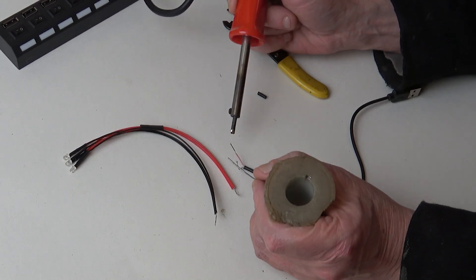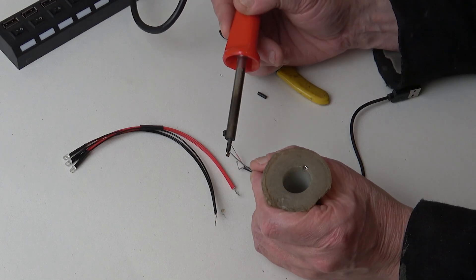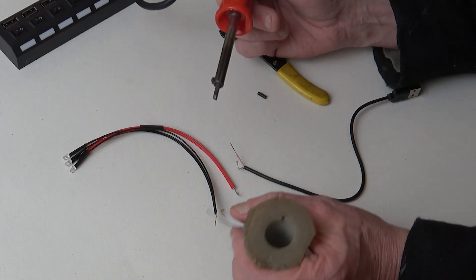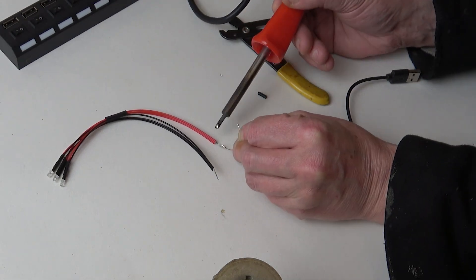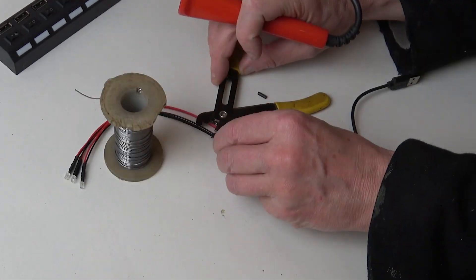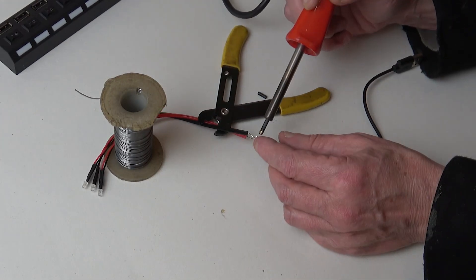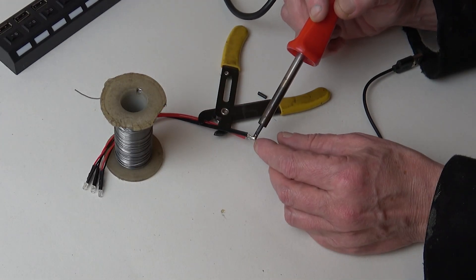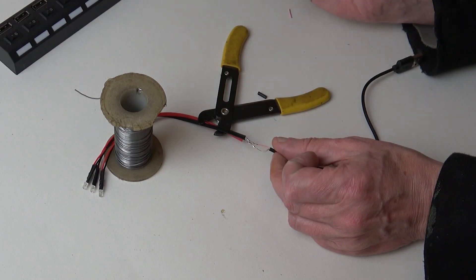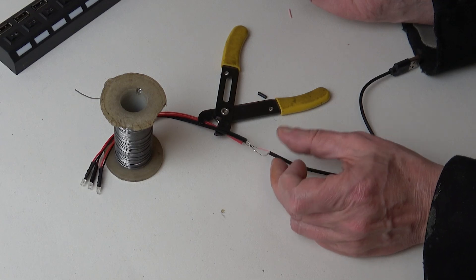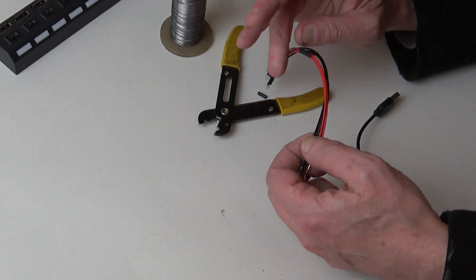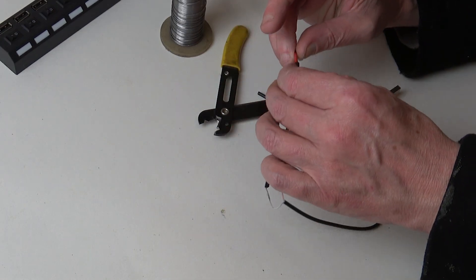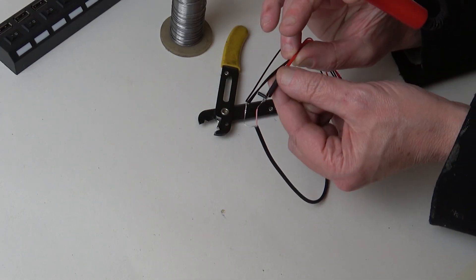The easiest way to do that once you've put some solder on each wire is just load a little bit up onto the soldering iron. And now a little bit of heat shrink that I pushed up there before can now go over that join.